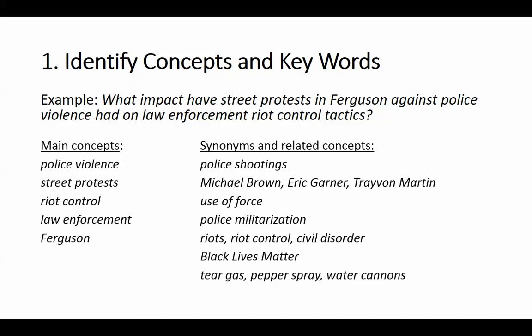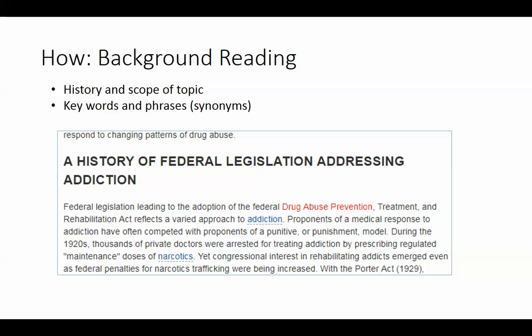So the next question is: how do I get from a topic or research question to a good and useful list of possible search terms? There are a couple of steps. The first and most important is to always do some background reading as an initial step, to help you understand the history and scope of your topic. The most important factor in any search is the accuracy of the words you type in, and getting this right is harder than it seems, because the words that experts use in the scholarly literature are often different than everyday language.